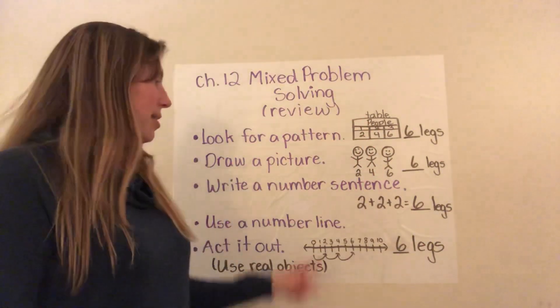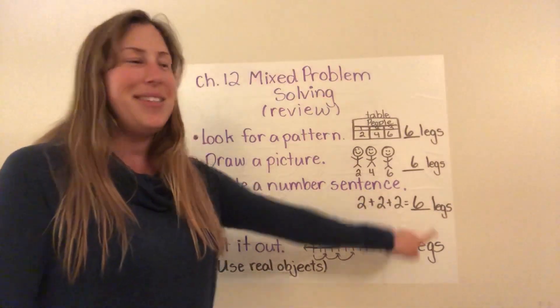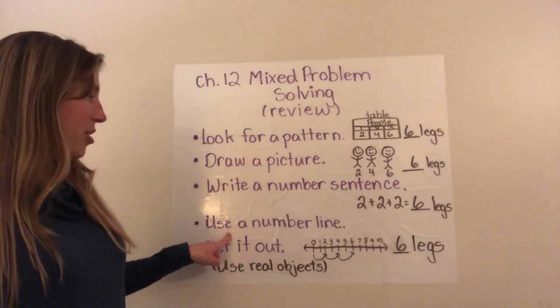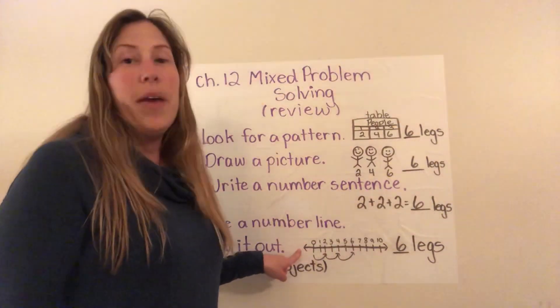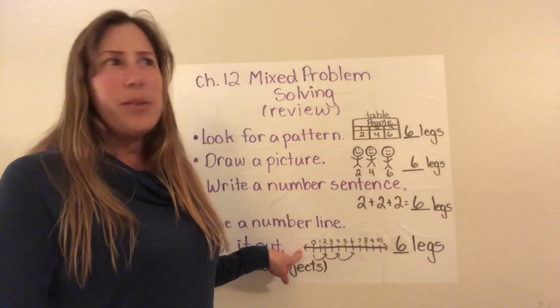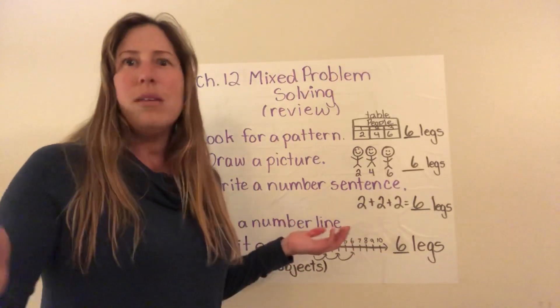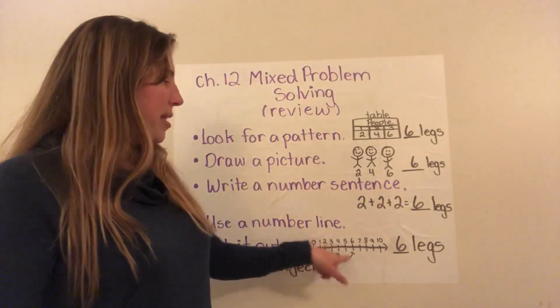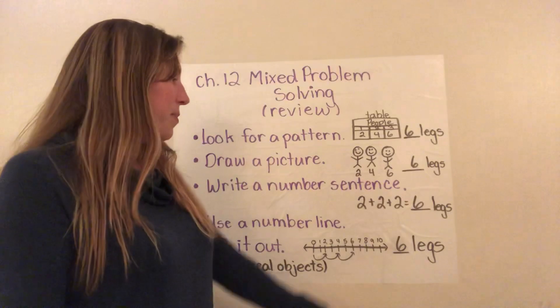And then another strategy is using a number line. If you have a ruler in your house, you can use a ruler as a number line, or you can just take a pencil and paper and draw a number line. And then you can skip count that way. So that's another example.